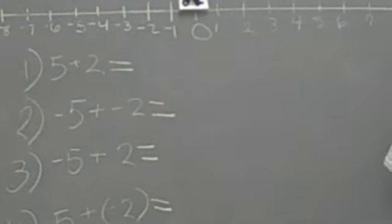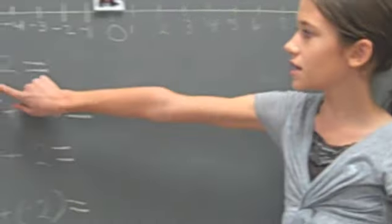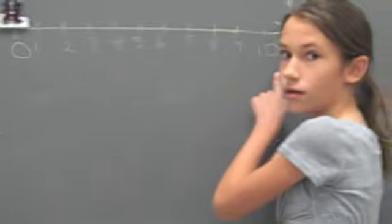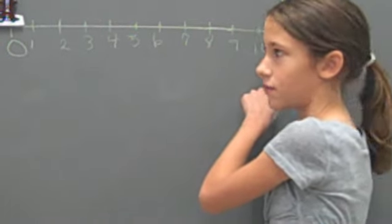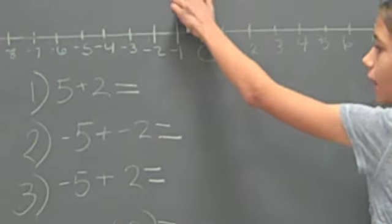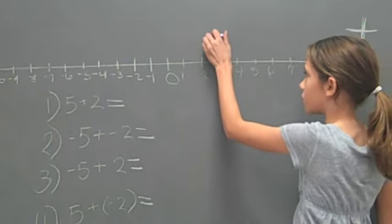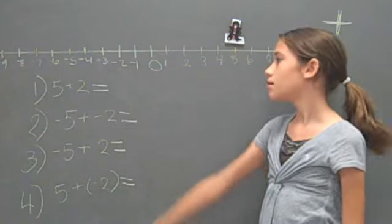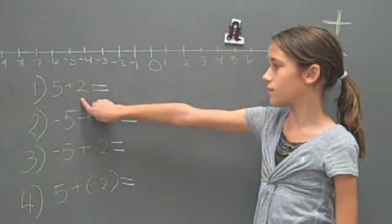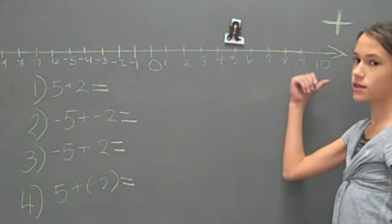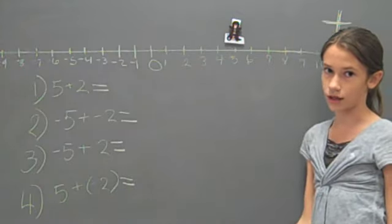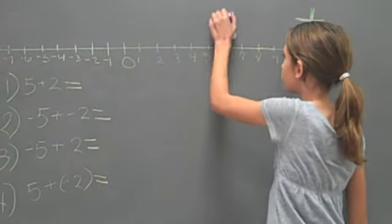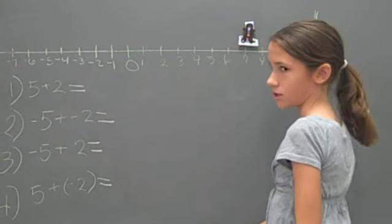The first problem is 5 + 2. Because five is a positive number, you face it to the right where the positive side of the number line is and move five spaces. And then, because two is also a positive number, you keep it facing to the right where the positive side of the number line is and move it two spaces. And our answer is seven.